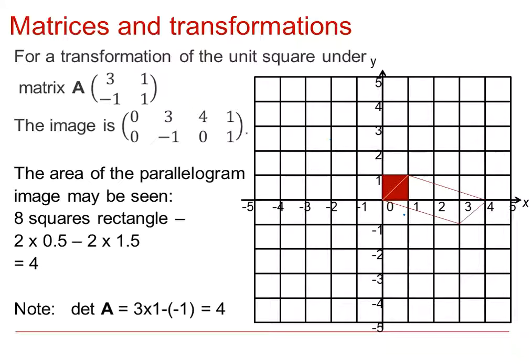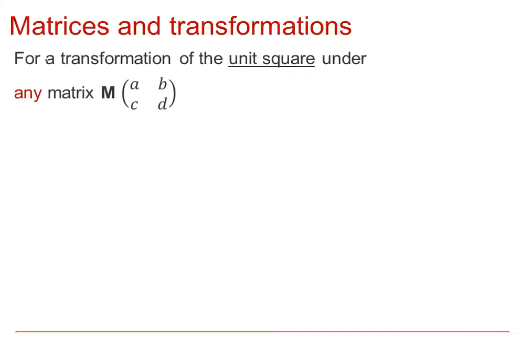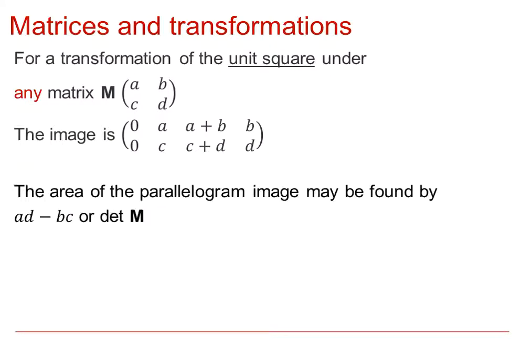The determinant of the original transforming matrix A was 3 × 1 − (−1 × 1), so the determinant of A was 4, and the area of the image was 4. For a general transformation of the unit square under any matrix M with entries A, B, C, D, the area of the parallelogram image may be found as AD − BC, which is the determinant of M.